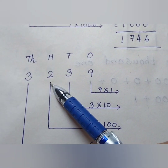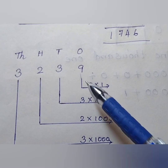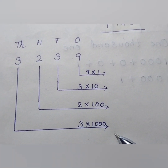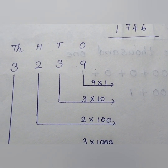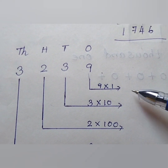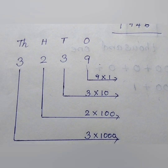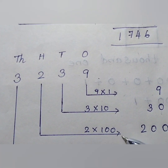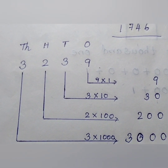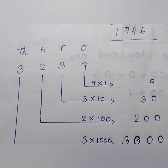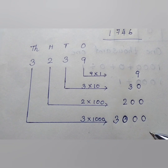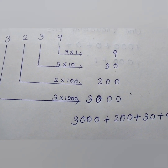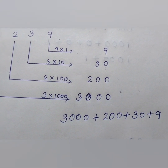Now coming to the next question, 3239. For each digit I have written the values: 9 into 1, 3 into 10, 2 into 100, and 3 into 1000. So while multiplying we get: 9 into 1 is 9; 3 into 10 is 30; 2 into 100 is 200; and 3 into 1000 is 3000. With these place values I have written the expanded form: 3000 plus 200 plus 30 plus 9.